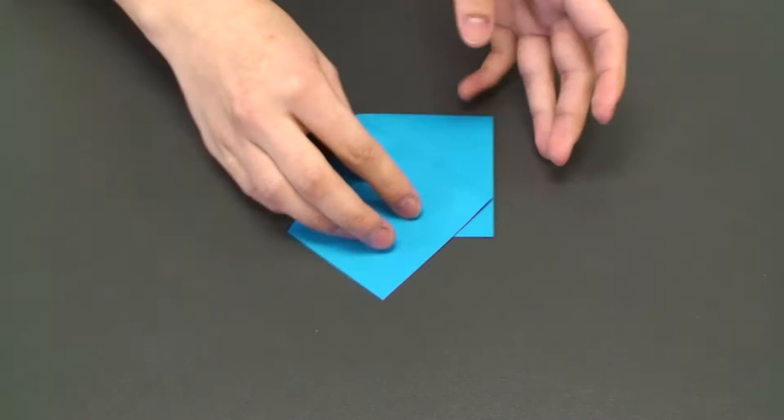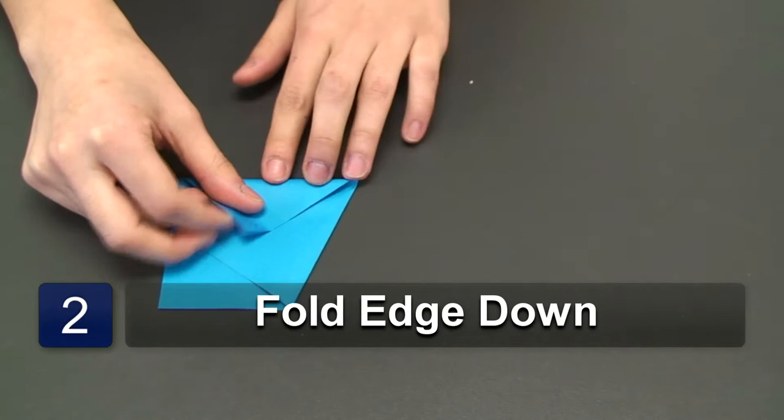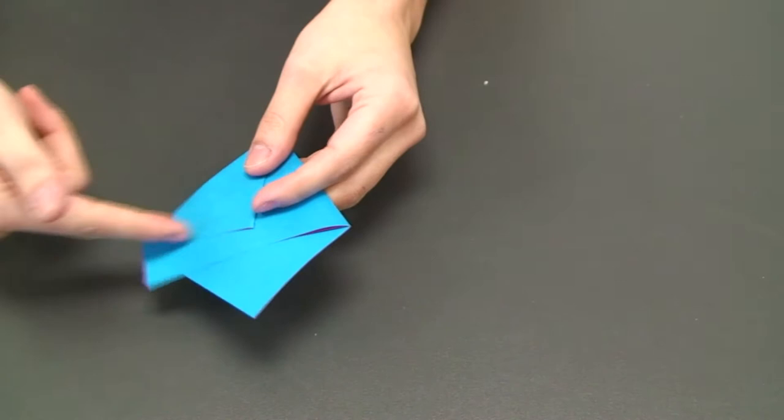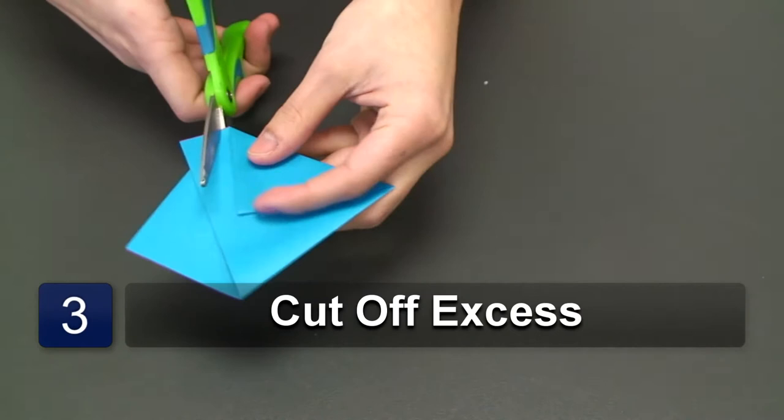Now fold it, and bring this side up. And now what we want to do is get rid of this part to create a triangle. So we're just going to cut from this line to this corner.